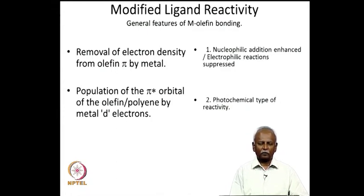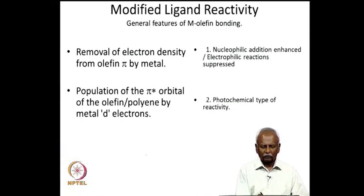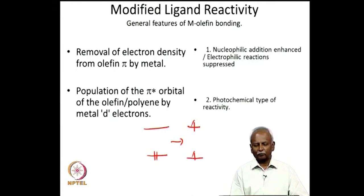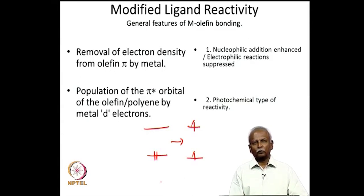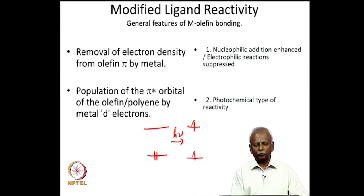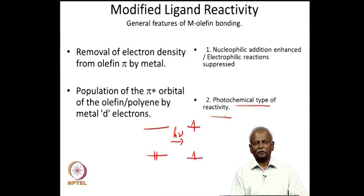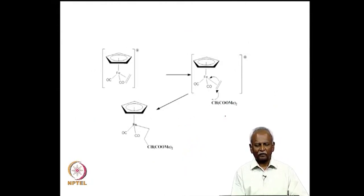A combination of the two factors — promotion of electron density from the π orbital to the π* orbital — should resemble the excitation of an olefin from its ground state to its first excited state. Although we have not transferred one electron completely as in photochemical excitation, it should be possible in complex ligands to see some type of photochemical reactivity. We will take a look at some of these reactions and see how we can rationalize them on the basis of our expectations.